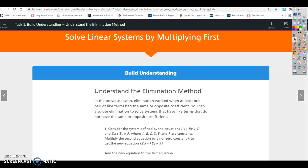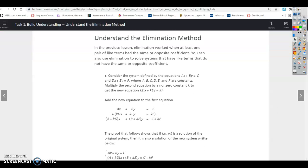Hey guys, today we're on lesson 9.4. We're looking at solve linear systems by multiplying first. So this is task 1 if you want to follow along. It says understand the elimination method. In the previous lesson, elimination worked when at least one pair of like terms had the same or opposite coefficient. You can also use elimination to solve systems that have like terms that do not have the same or opposite coefficient.